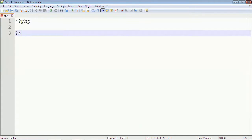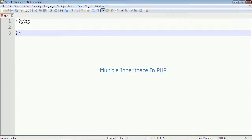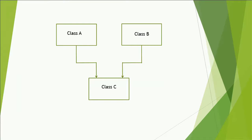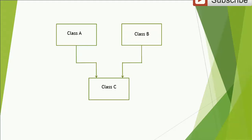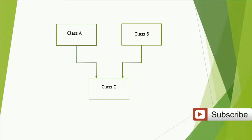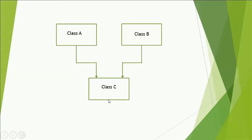Hello everyone. Welcome to the programming. Today we will learn multiple inheritance in PHP. First let's see what is multiple inheritance. Here you can see class A and class B have a common child class or derived class as class C. That is multiple inheritance, or simply we can say class C has two base classes: class A and class B.